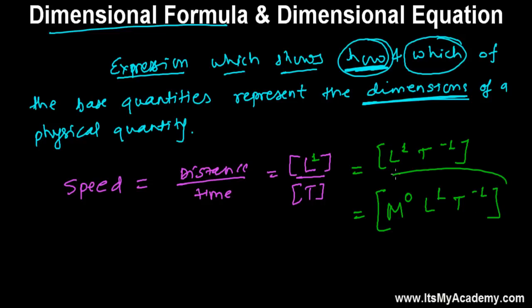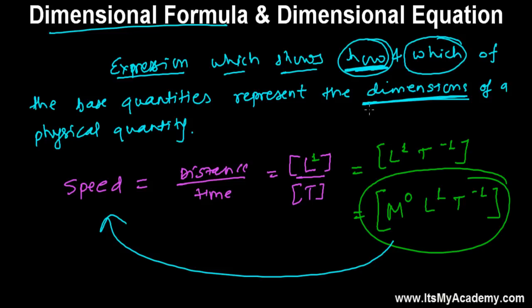So this expression is showing the dimensional formula of speed because this is giving us the answer of how and which. This is elaborating the how and which. See, which are the base quantities that is making the speed? We can easily get the answer: yes, length and time.